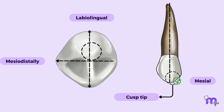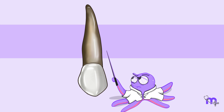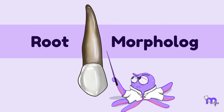Let's now examine the tooth from the distal aspect. The outlines are mirror images of the mesial aspect, with a few differences: lesser curvature of the cervical line, the distal marginal ridge is heavier and irregular, and the distal surface exhibits more concavity above the contact area.